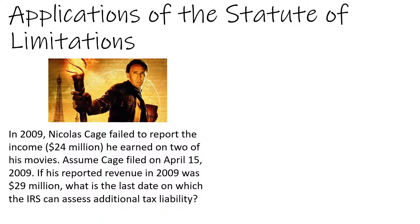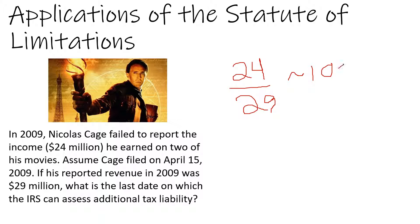Now let's look at another one of Nicholas Cage's tax foibles. In 2009, he failed to report income equaling $24 million that he earned on two of his movies. If his reported revenue was $29 million, what is the last date on which the IRS can assess additional tax liability? $24 million out of $29 million is almost 100%. This meets the egregious error requirement of the IRS, which means they have at least six years to come after Nick Cage. However, if the IRS were to determine that Nicholas Cage willfully and intentionally attempted to defraud the government, there's no limit to the statute.